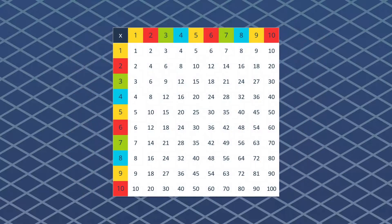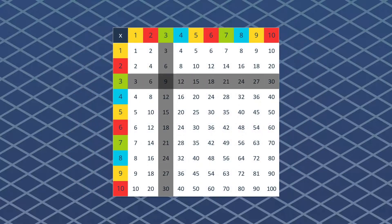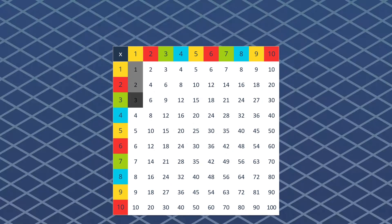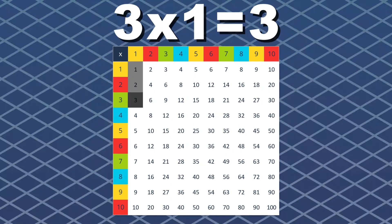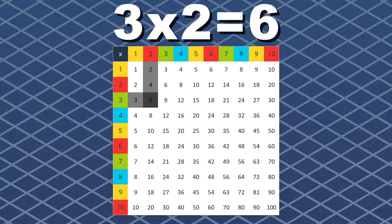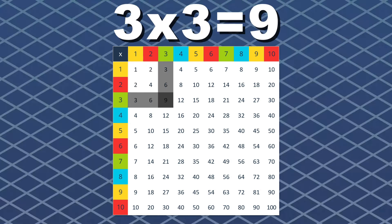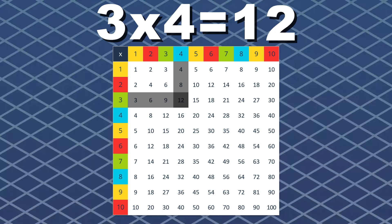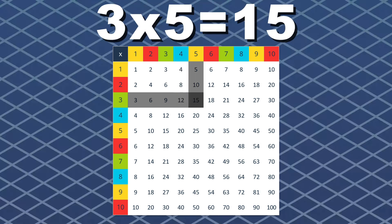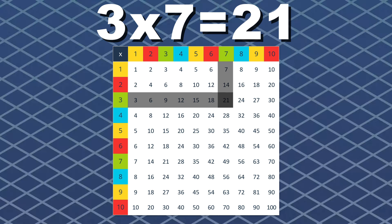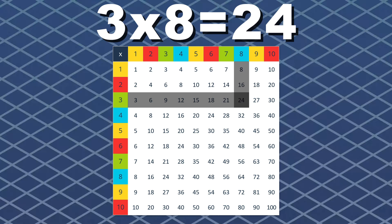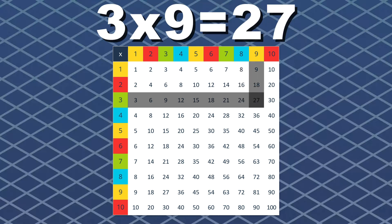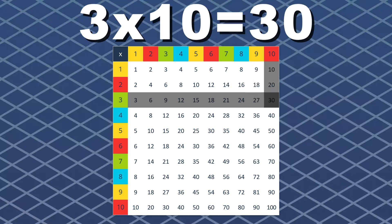Now let's multiply by three and see what we get. Use a times table in case you forget. Three times one equals three, and three times two equals six. Three times three equals nine. Three times four equals twelve. Three times five equals fifteen, and three times six equals eighteen. Three times seven equals twenty-one. Three times eight equals twenty-four, and done.